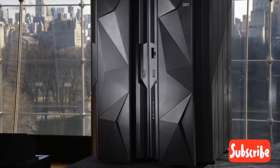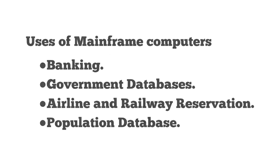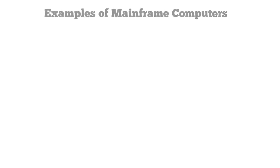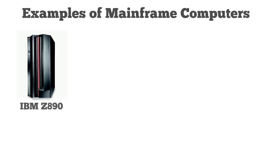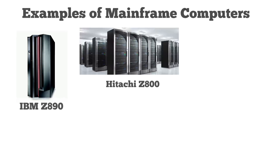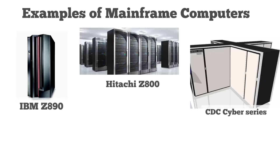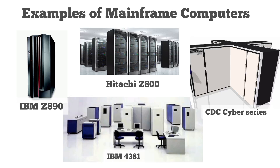They can store data and deliver millions of instructions per second. Mainframe Computers are used in banking, government databases, airline and railway reservation, and population databases. Examples of mainframe computers are IBM Z890, Hitachi Z800, CDC Cyber Series, and IBM 4381, etc.